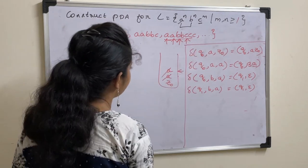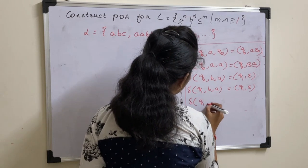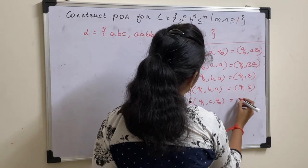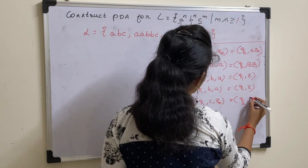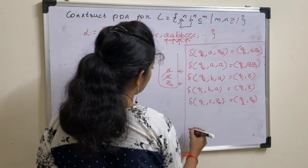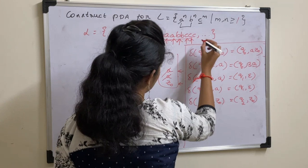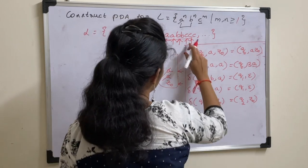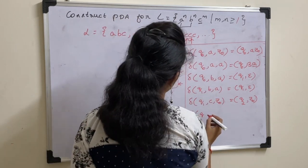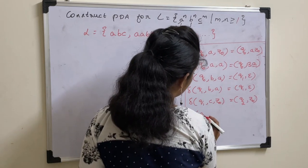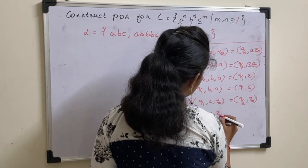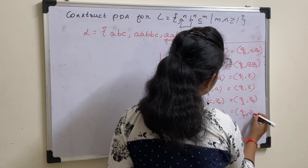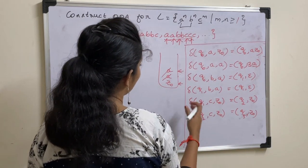Now move to C. Delta of (Q1, C, Z naught): the top of the stack is Z naught, so do nothing — just change state and write the top of the stack. For the next C, this function remains the same for any number of C's. So delta of (Q2, C, Z naught) gives Q2, Z naught. This function is the same for any number of C's.